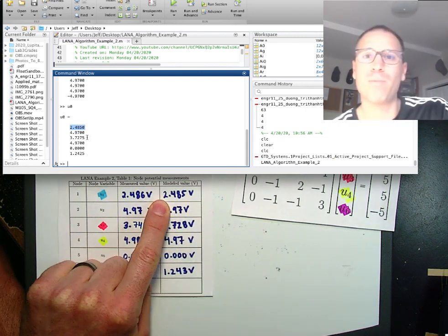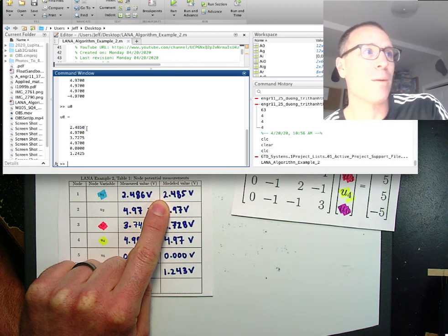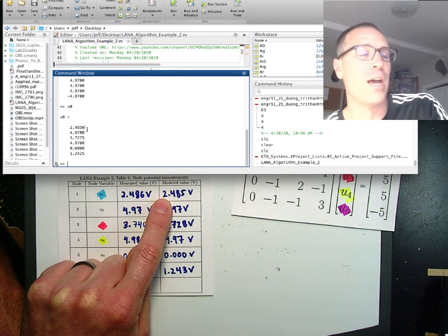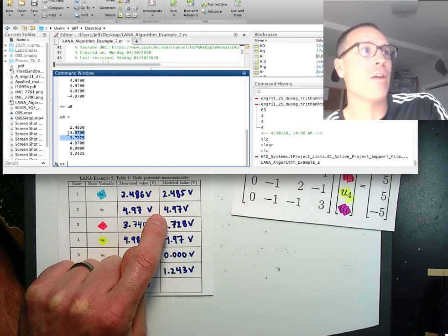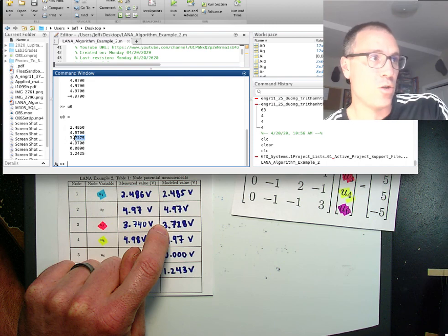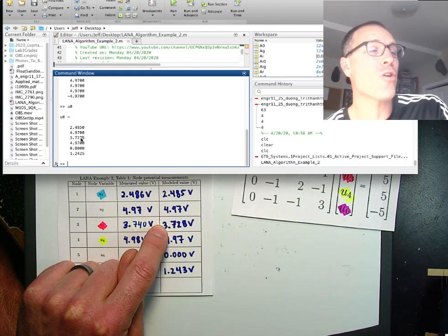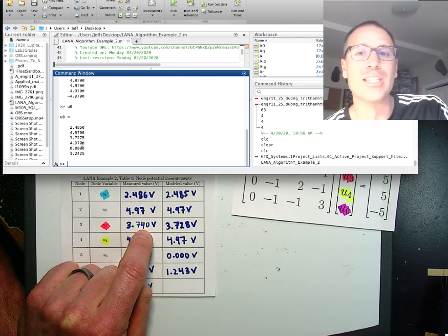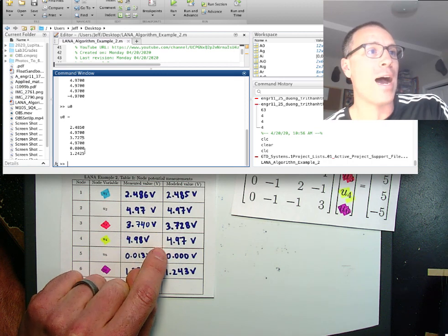So the matrix model that I'm using in my linear systems problem tells me that the node potential at node 1 should be 2.485. The node potential at U2 should be 4.97. U3, I'm going to round to the third decimal digit because that's the accuracy of my measurement tool. And I just moved down.